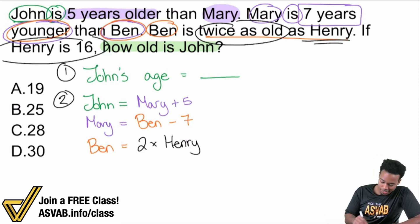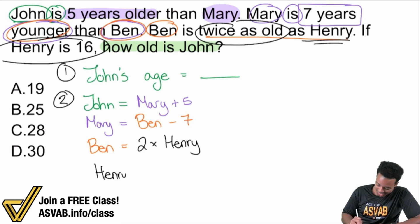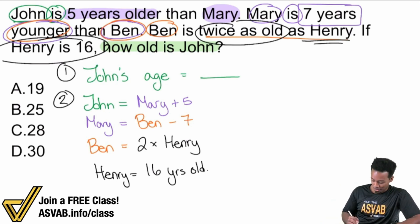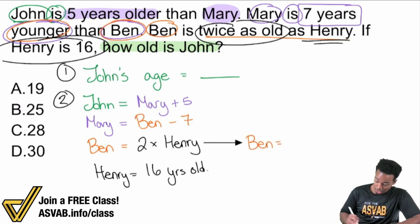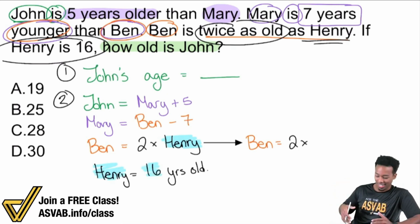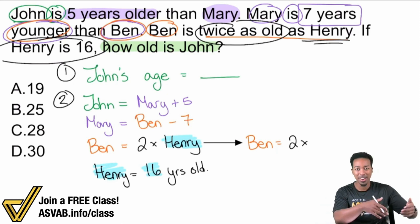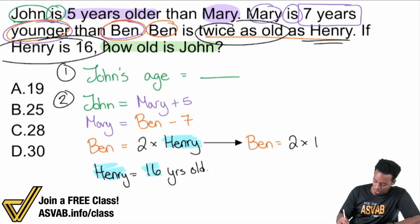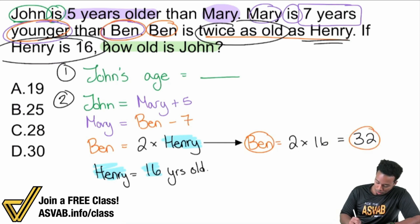Now we have Henry — Henry equals sixteen. If you're asking whether you need to write all that: yes, if you're struggling with word problems, write things down. Now watch this — I'm going to plug this in. Ben equals double Henry's age, two times Henry, and Henry is sixteen. So Ben equals two times sixteen, which means Ben is thirty-two. So I can replace Ben with thirty-two right here, because Ben is thirty-two years old.